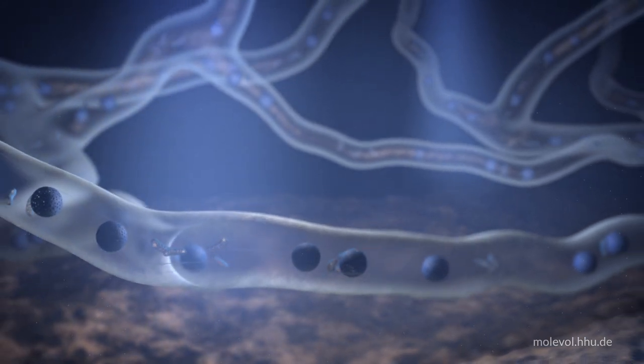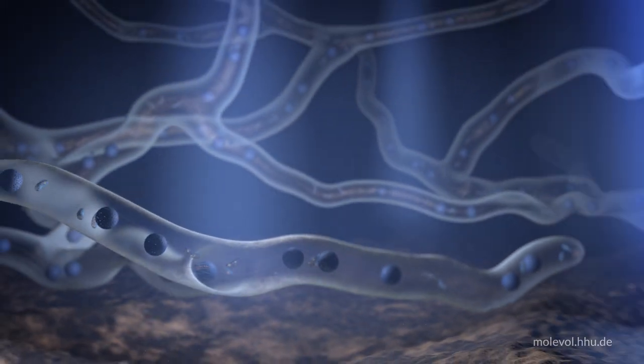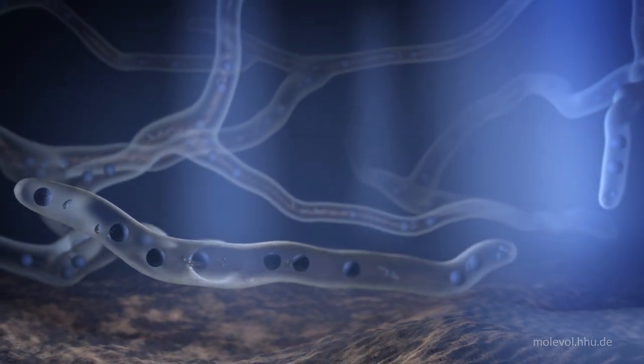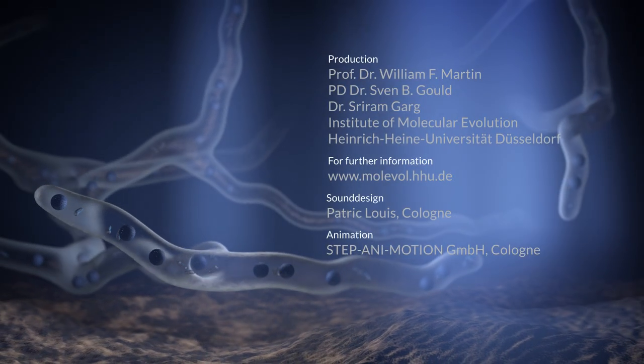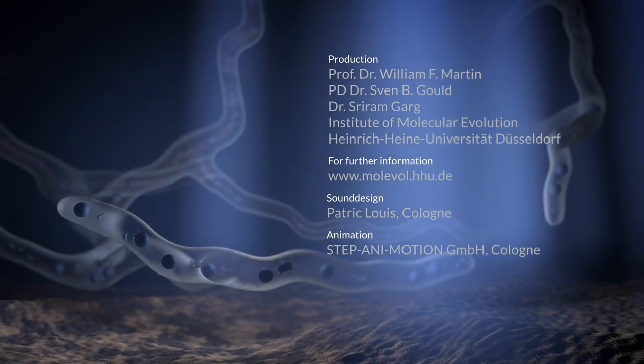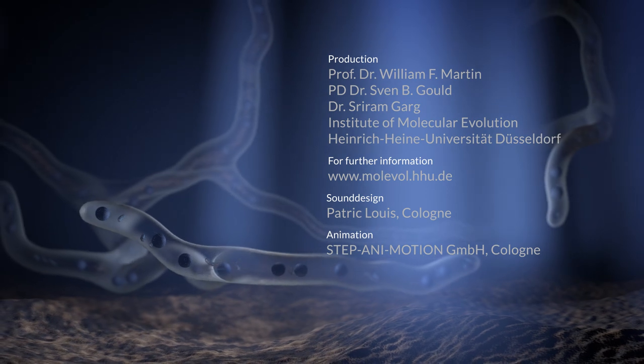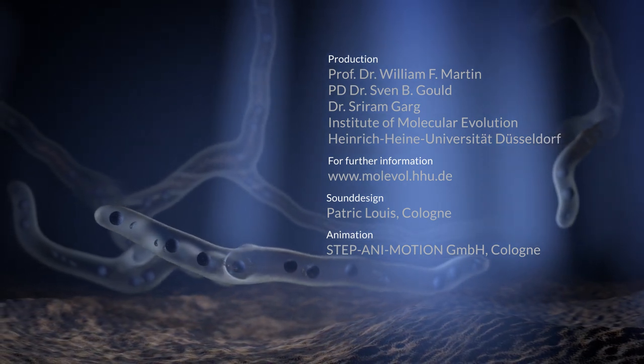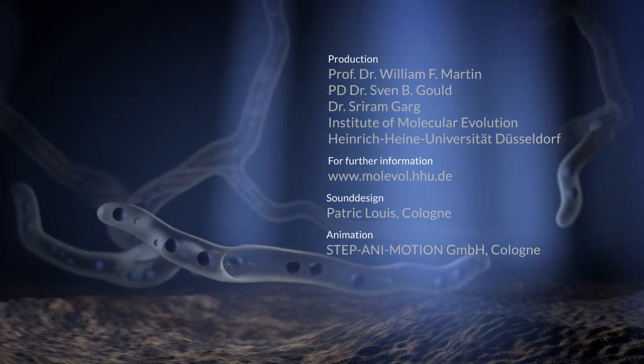The very first members of the eukaryotic lineage were likely spore-forming filaments that could live with or without oxygen. From such humble beginnings, all complex life arose, and one fateful endosymbiosis made it possible. Thank you.